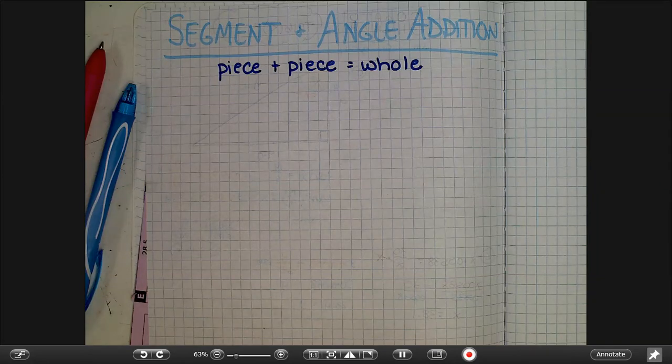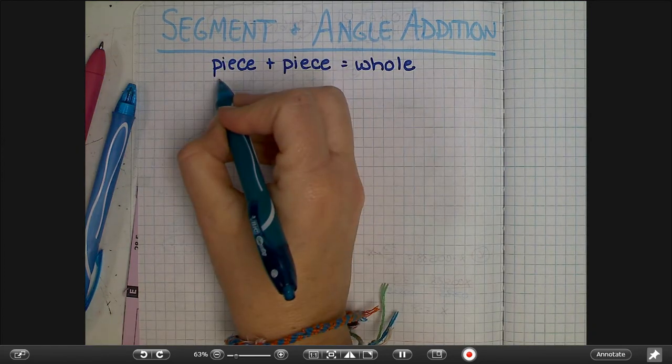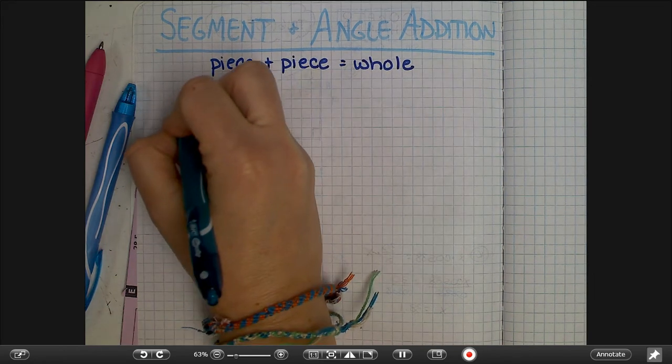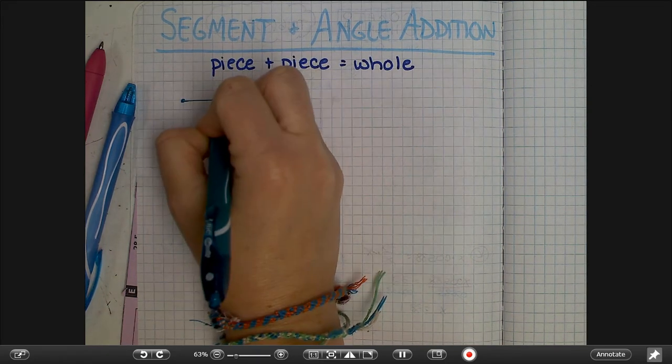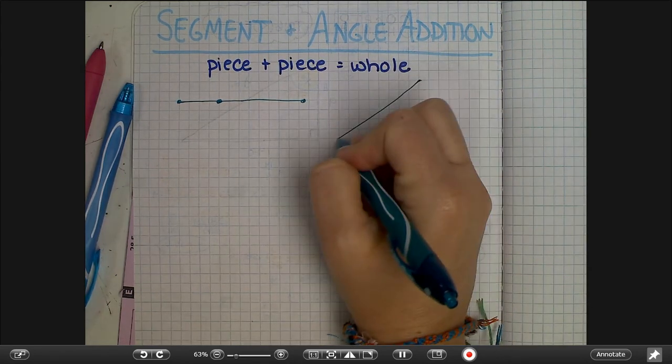I'm going to make a little video about segment and angle addition today. This is something we've done multiple times but without making it formal, so today we're just going to make it formal. Basically, segment and angle addition has the same formula, which is just that you're going to add whatever the pieces are that you have together and that equals the whole thing.